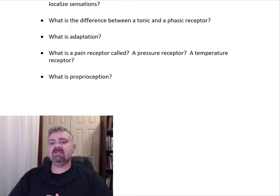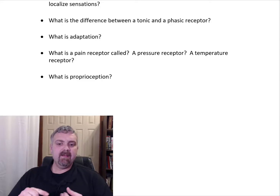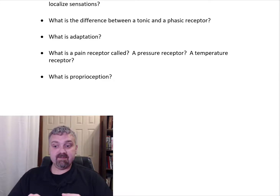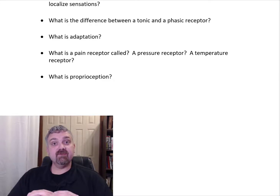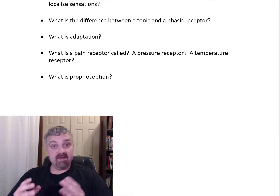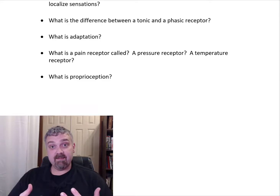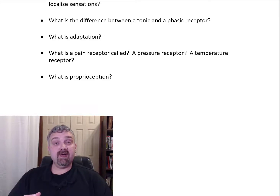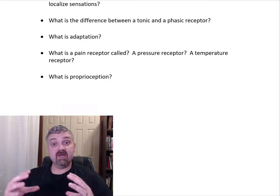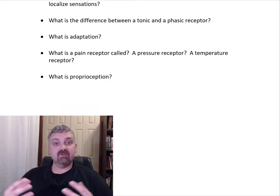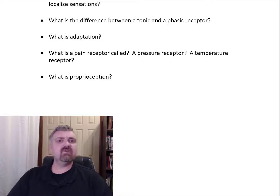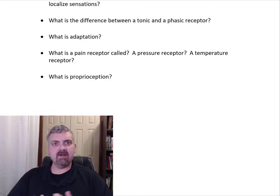What is a pain receptor called, a pressure receptor, or a temperature receptor? Pain receptors are called nociceptors — and they're tonic receptors, always on as long as there's tissue damage. Pressure receptors are called baroreceptors — think the receptors in your blood vessels, the receptors that make sure you don't overstretch your stomach or your lungs. Temperature receptors are called thermoreceptors, and there are cold and hot thermoreceptors monitoring changes in temperature because they're phasic receptors.